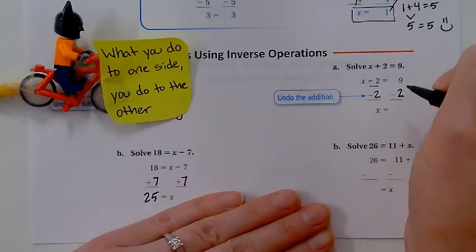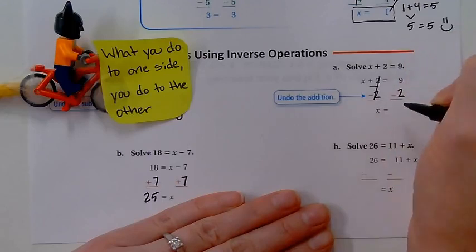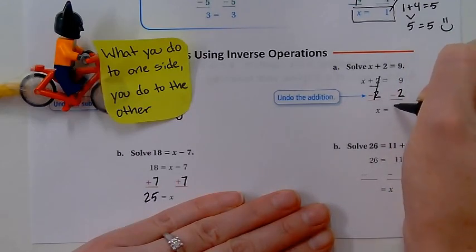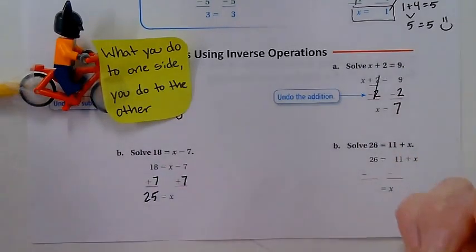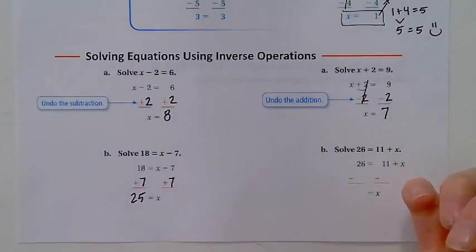All right, so these cancel out. I have x by itself. 9 minus 2 is 7.